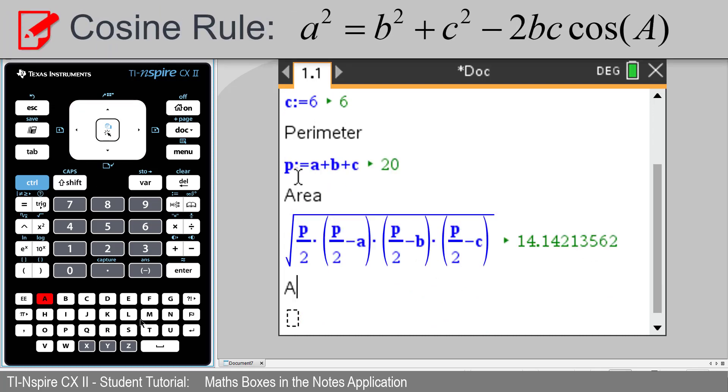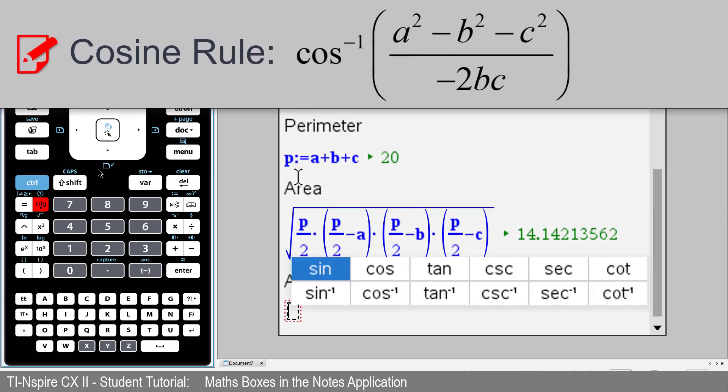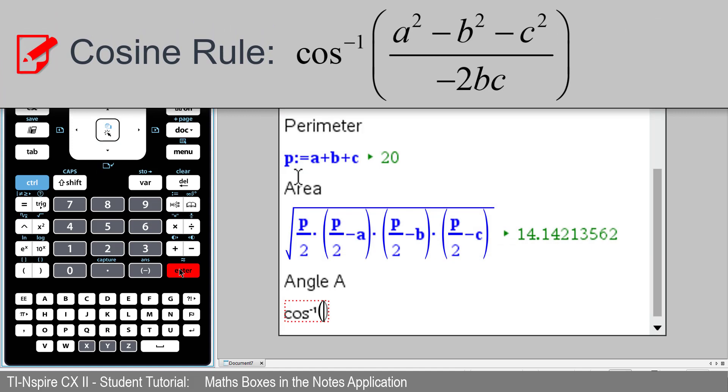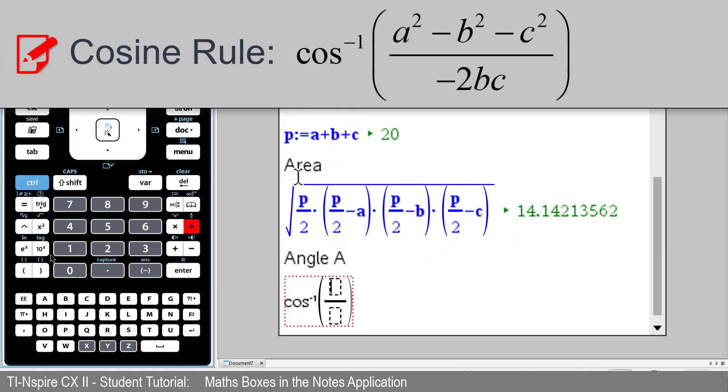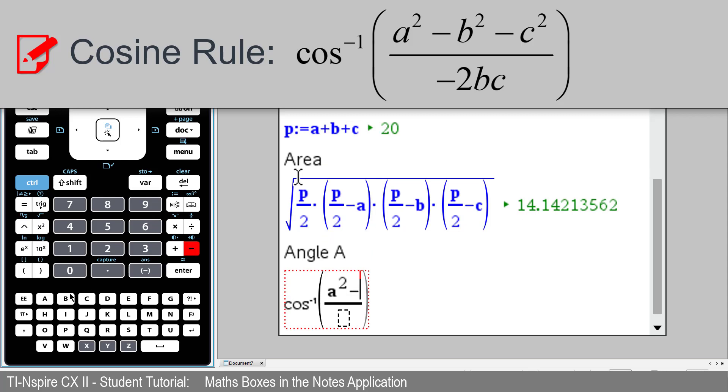But we can rearrange the cosine rule. Type the heading angle A. And inside a maths box, type the formula: the inverse cosine of A squared minus B squared minus C squared all over negative 2 times B times C. And press enter.